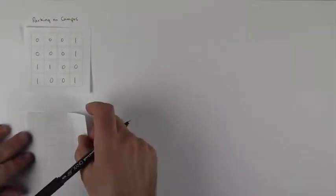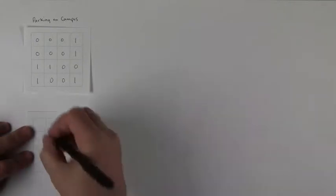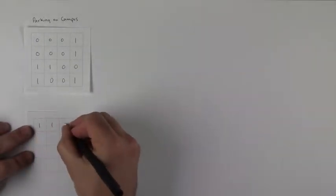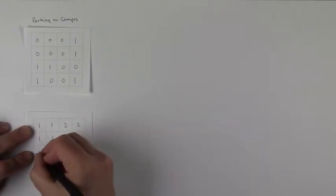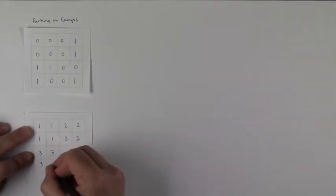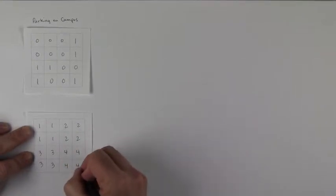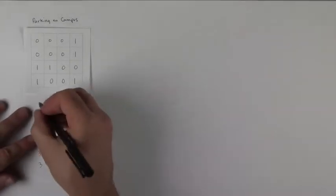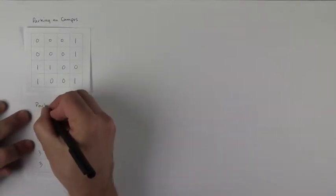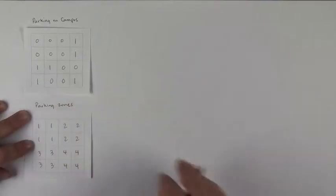And this guy looked roughly like this, where there were these little squares with unique numbers identifying these zones. And this was our parking zone raster.